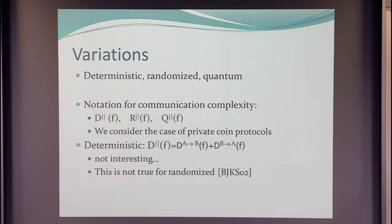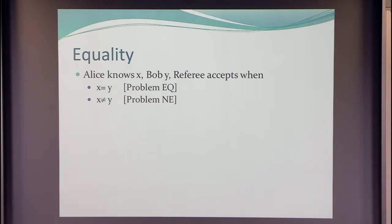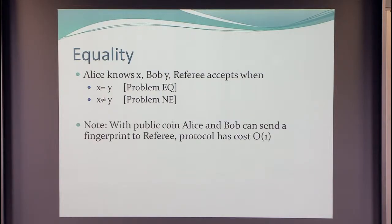A relation like this is not true for randomized complexity, as observed by Babai et al. Now, maybe the problem to study in this model is equality. Everybody knows this problem: Alice knows X, Bob knows Y, and we want to know whether X equals Y. But we are going to look at two different flavors — equality and non-equality — because we are going to look at a non-deterministic version of this model.